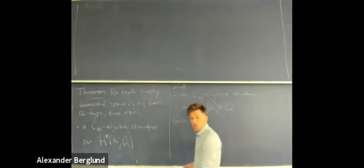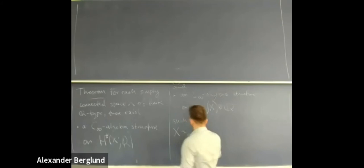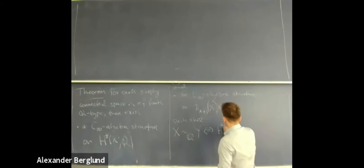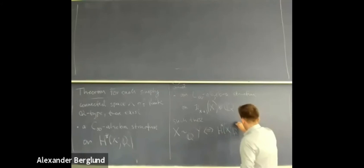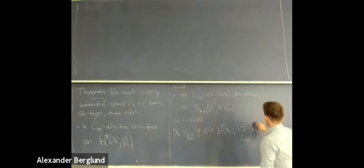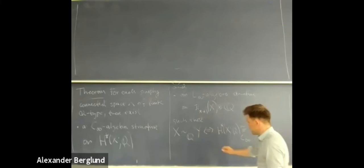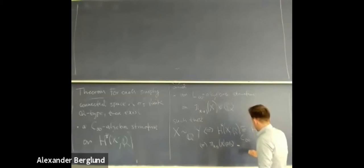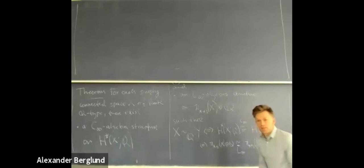These structures have the property that two simply connected spaces X and Y are rationally equivalent — I'll remind you what this means in a second — if and only if the cohomology ring with the C-infinity structure is isomorphic in the C-infinity sense, or equivalently, the L-infinity algebra on the homotopy groups is isomorphic in the L-infinity sense.